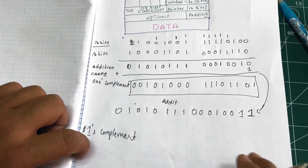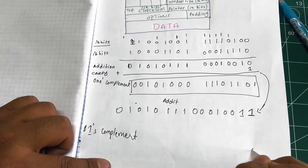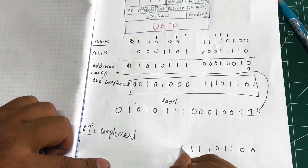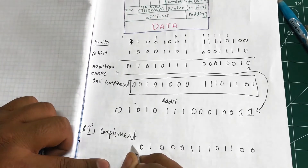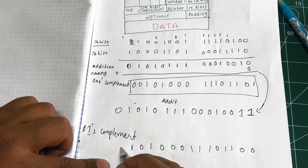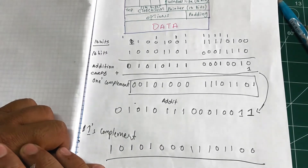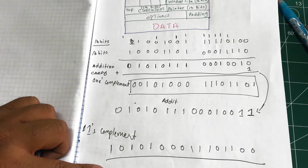After taking the one's complement, the result turns out to be: 0011 0111 0001 0101 0101. This final value is your checksum. I hope you liked the video — if you need any help, leave a comment and let me know.